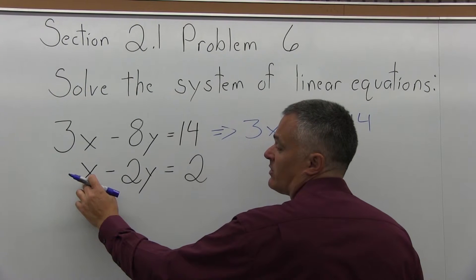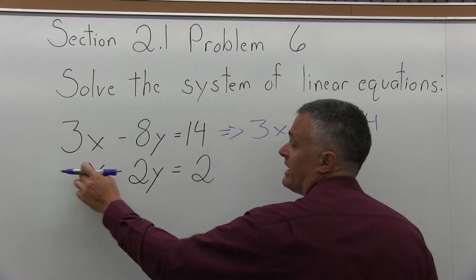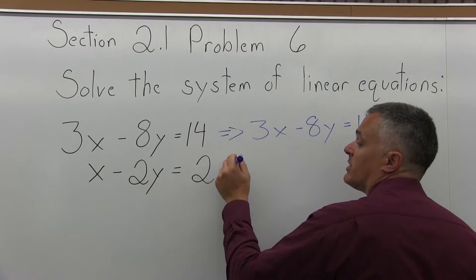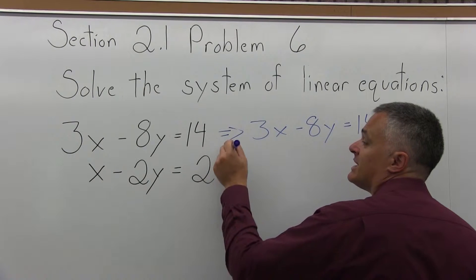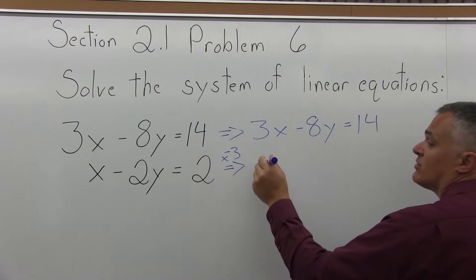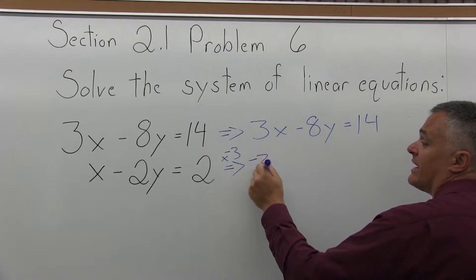However, the bottom equation, if I need to make this into a negative 3x, everything in the bottom equation will get multiplied times a negative 3. So, negative 3 times x is negative 3x.